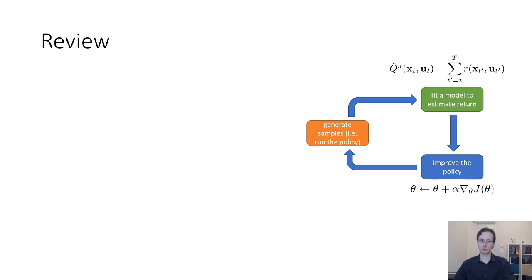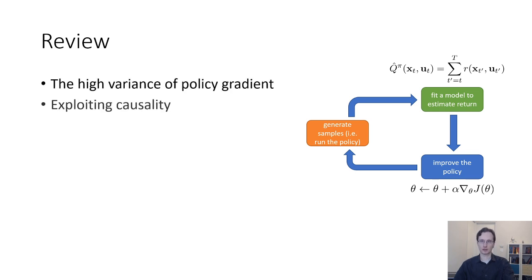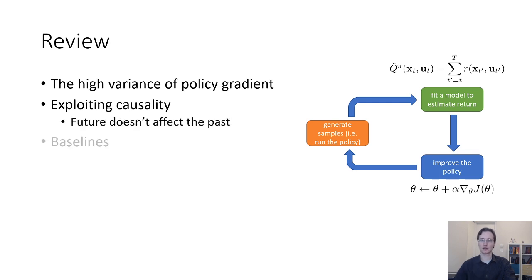To review what we've covered: we talked about the high variance of policy gradient algorithms, how we can lower that variance by exploiting the fact that present actions don't affect past rewards, and how we can use baselines which are also unbiased. We also analyzed variance to solve for the optimal baseline.